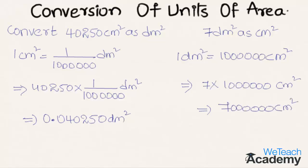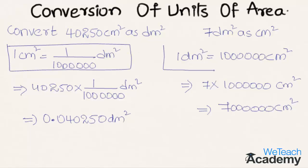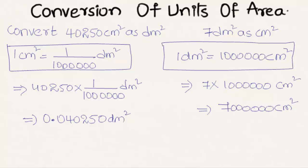So we can conclude that one centimeter square is equal to one by one million decameter square, and one decameter square is equal to one million centimeter square. This was the basic introduction on how to convert centimeter square into decameter square and vice versa. Hope you understood the concept. Do like and subscribe to vtchacademy.com. Thanks for watching. Have a nice day.